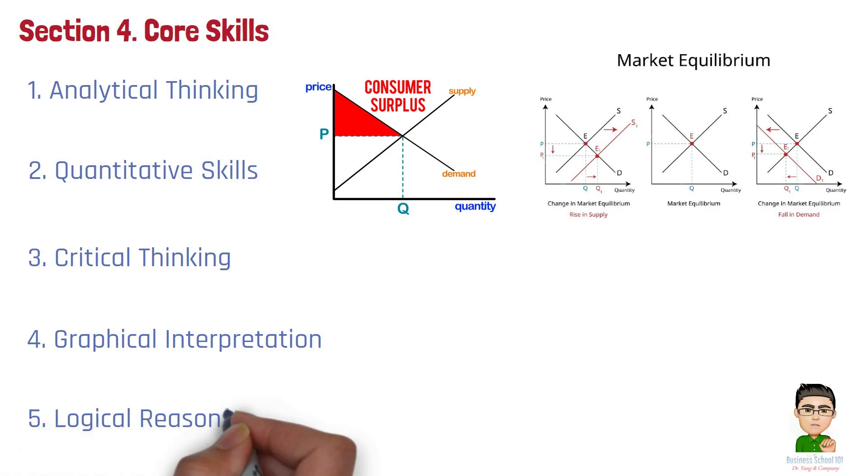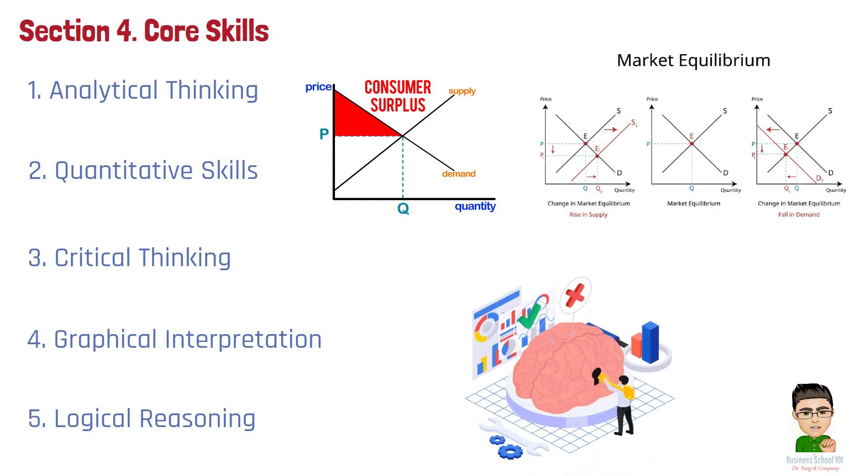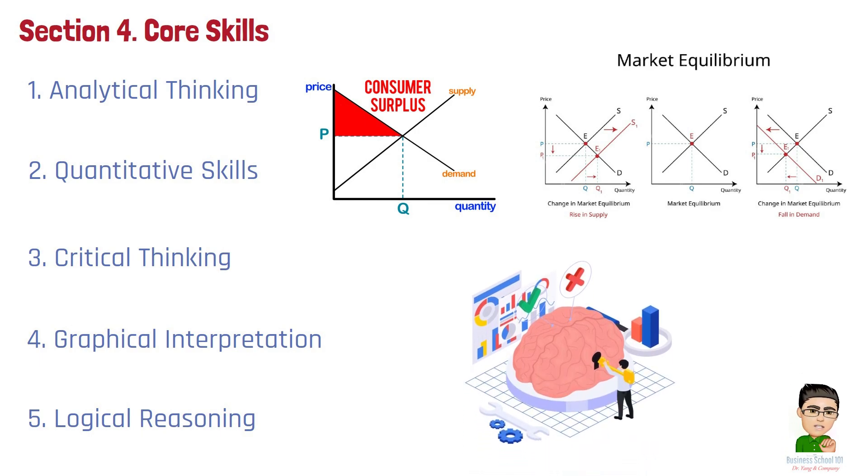Number 5. Logical Reasoning. Logical reasoning is essential for understanding cause-and-effect relationships in microeconomics. It helps in following the logical flow of arguments, making inferences, and understanding the implications of different economic decisions.